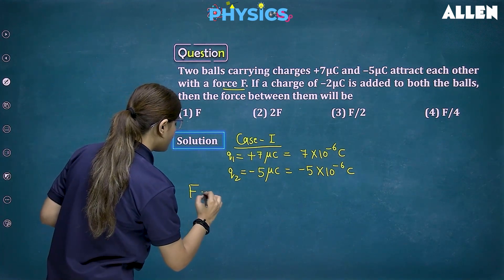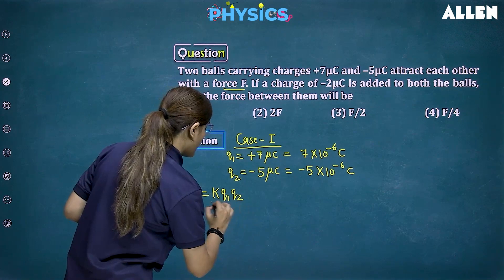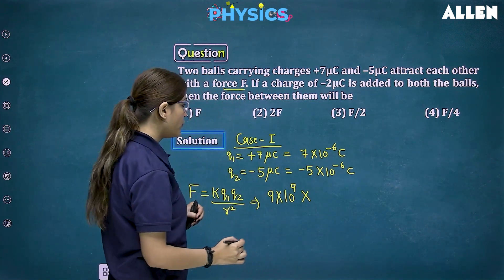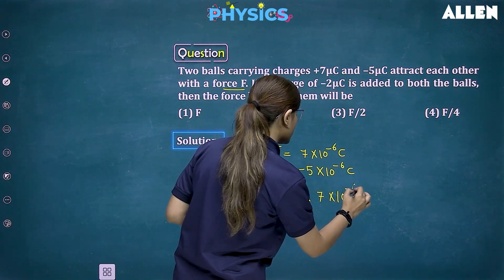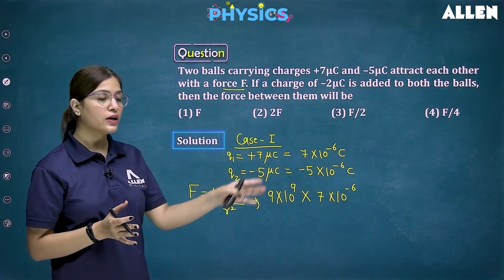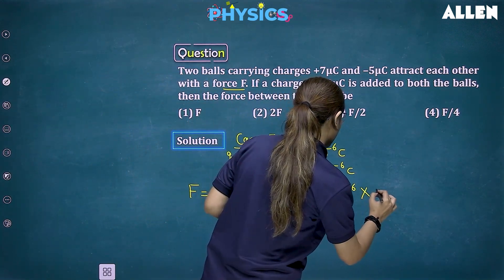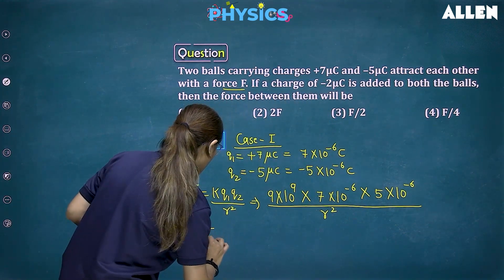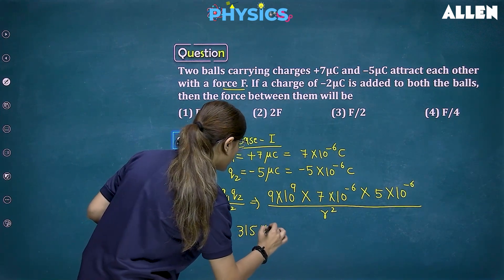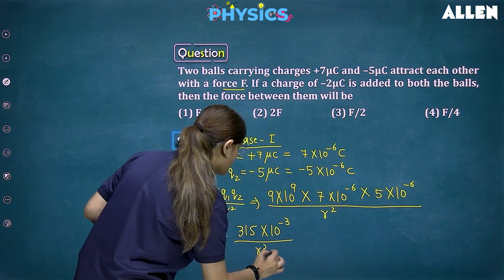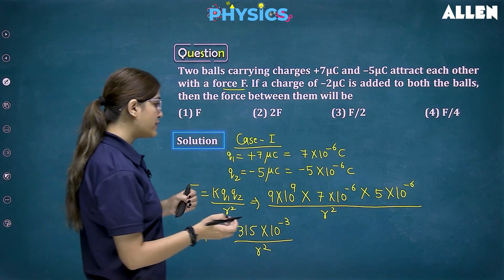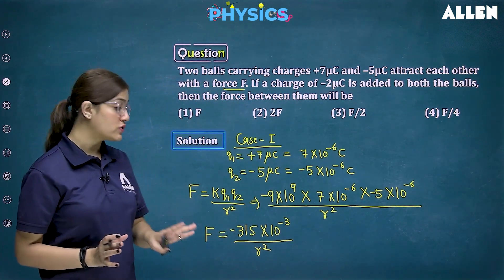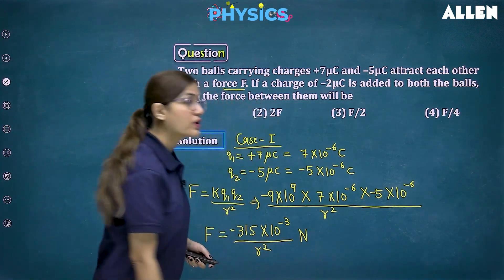The attraction force is F equals K Q1 Q2 upon R squared. Substituting: 9 times 10 to the power 9, multiplied by 7 times 10 to the power minus 6, multiplied by 5 times 10 to the power minus 6, divided by R squared. Solving gives 315 times 10 to the power minus 3 upon R squared Newton, or with sign: minus 315 times 10 to the power minus 3 upon R squared Newton.